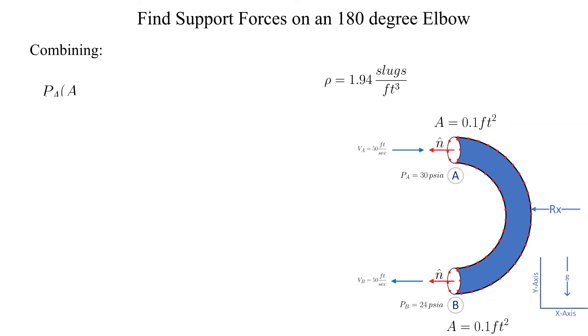Now let's combine all the parts as shown. Remember, we must use gauge pressure, not absolute pressure. Atmospheric pressure exists all around the elbow, so we use gauge pressure so we don't have to try to integrate over those surfaces.